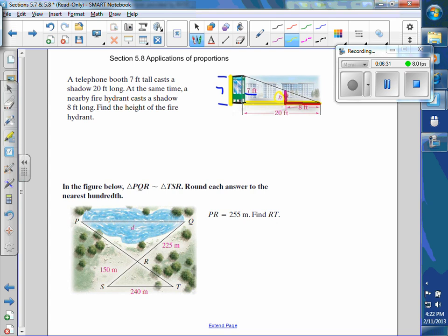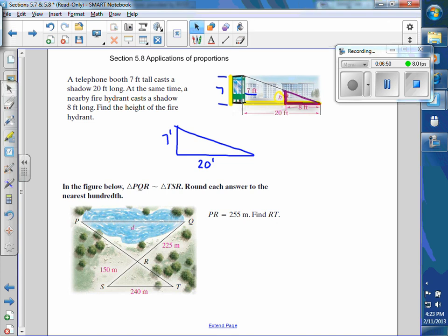So like we talked about in class, there's similar triangles here. There's this big triangle. So imagine taking this out of the picture. This is 7 feet by 20 feet. And then there's this little triangle. Take that out of the picture. And this is H. We don't know this value. But we know this is 8. And we know the triangles are similar.